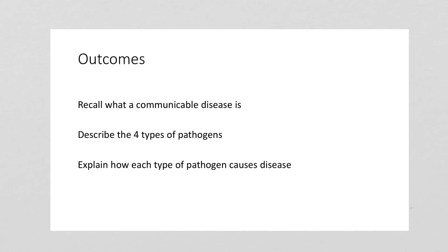Our outcomes were to recall what a communicable disease is, name the four types of pathogens, and explain how all four cause disease. For homework, look up the specific diseases on the AQA GCSE spec: there is one protist disease (malaria), three viral diseases, two bacterial diseases, and one fungal disease — not athlete's foot, but a different fungal disease that affects plants. Do a little research on the internet before the next lesson. Thank you very much. Bye-bye.